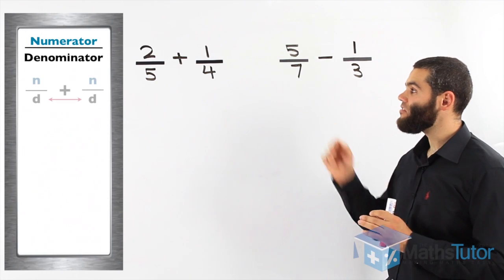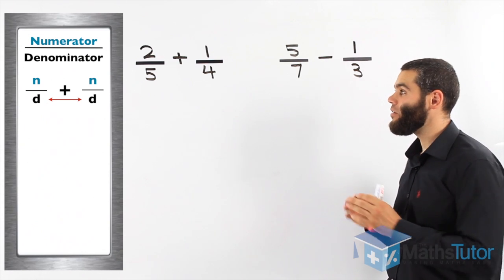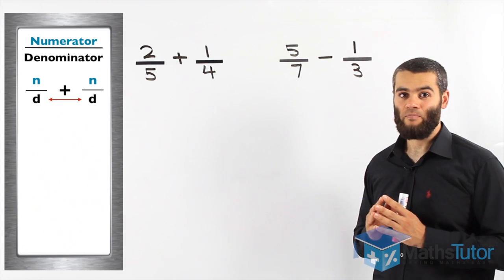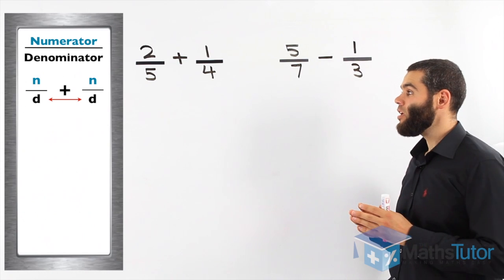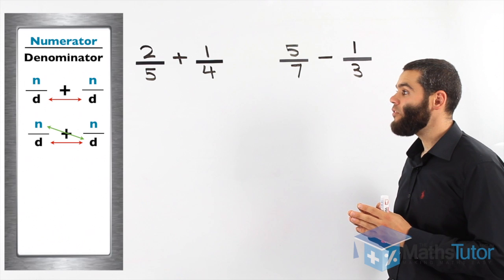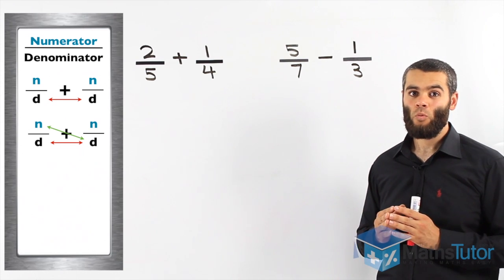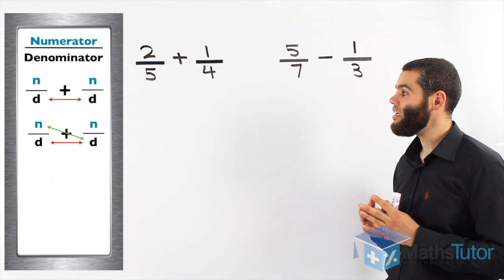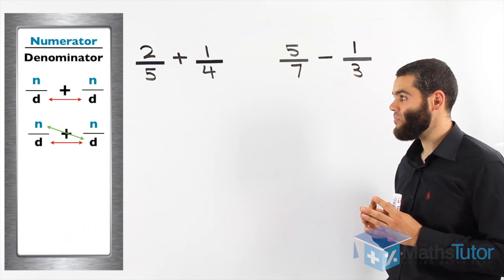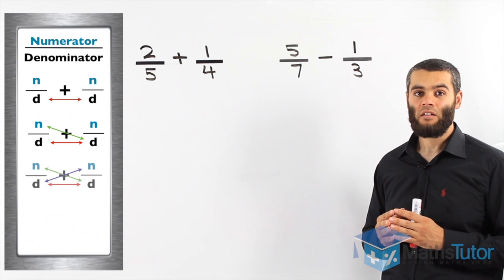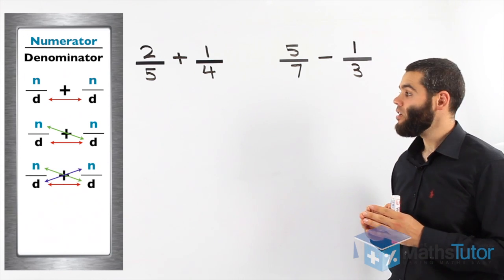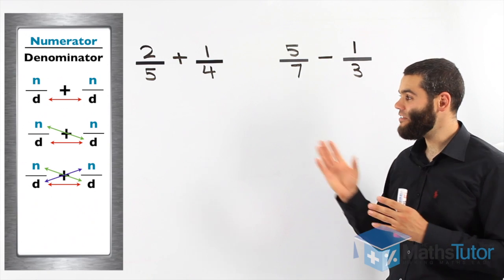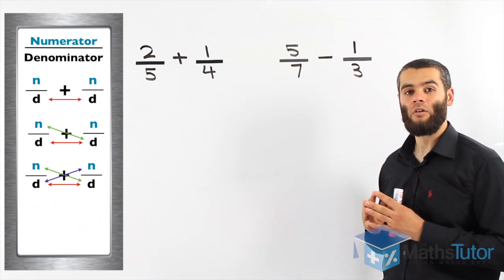How do we make them the same? First step is to multiply the denominators as you can see in the red arrows. So what we do, we multiply the denominators together. Then, second step is to multiply the first numerator with the other denominator as you can see in the green arrow there. The numerator times the denominator.